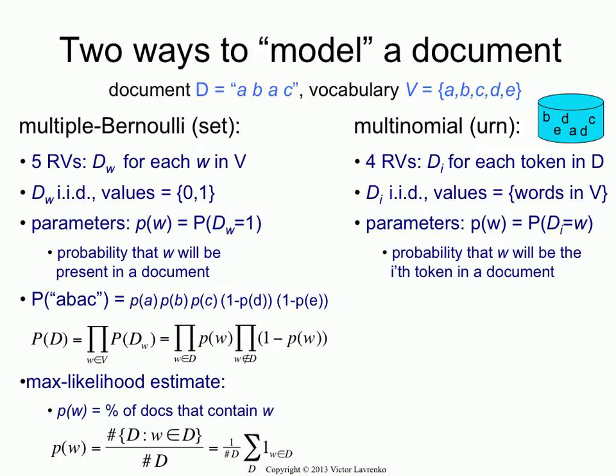Different representation, different random variables. If you make that assumption, you still have your probabilities PW, but they mean a slightly different thing now. PW now means the probability that the i-th token in the document will be the word W — for example, the probability that the third word in the document will be aardvark. We're assuming that the di's are IID, so the probability that the third word is aardvark is the same as the probability that the seventh word is aardvark — they're identically distributed.